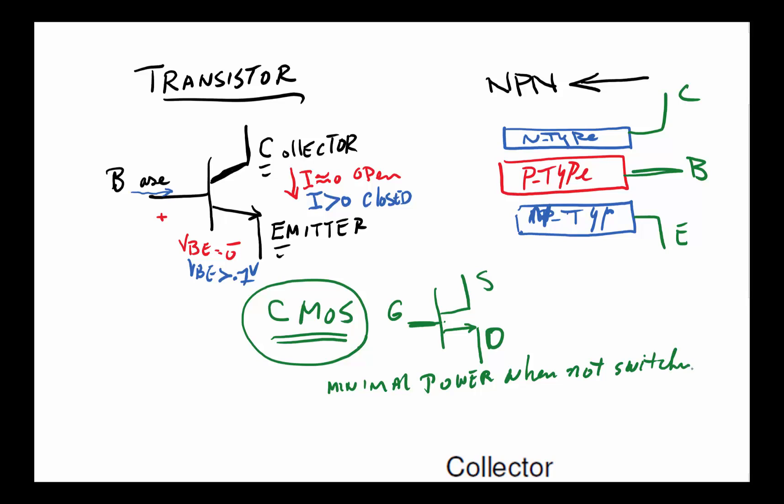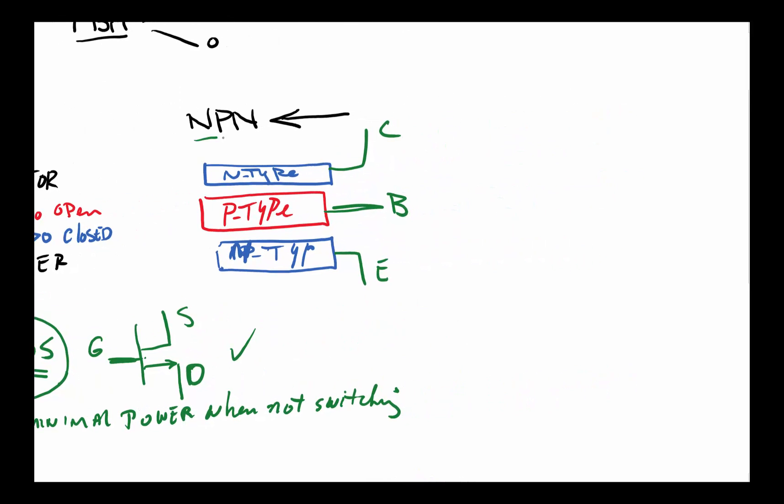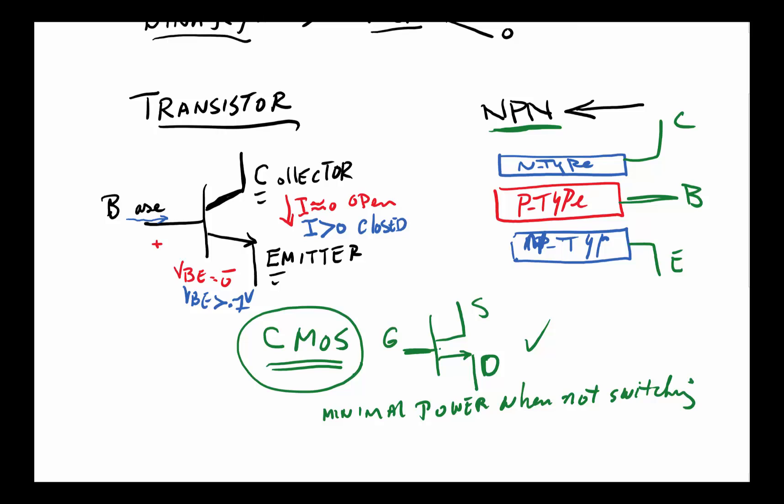As long as this value is not changing and the gate is not changing high or low, then it doesn't use any power or current. That low power is really why we use these much more these days than bipolar types. Of course, there are lots of varieties—NPN, PNP—and each has its own advantages and disadvantages. The only thing we want you to take away is that a transistor, the way it's used in digital logic, is a switch, and that's its goal.